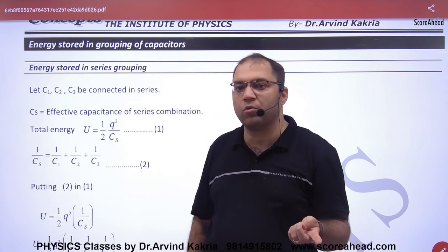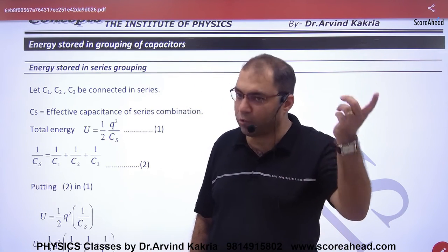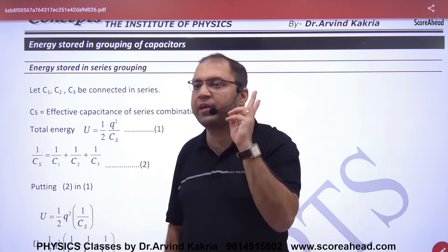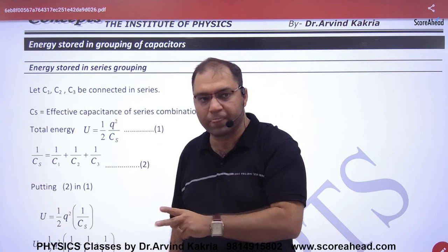So this formula is more beneficial. And when the question of parallel comes, then we use the formula half CV squared because the voltage value is the same. Right? Clear?